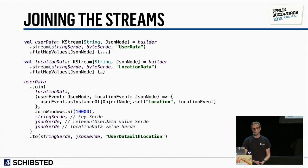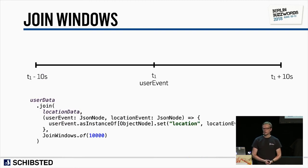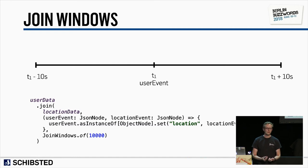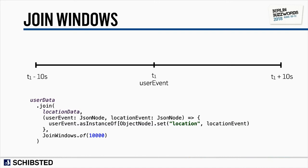About join windows: each Kafka entry has a key, a value, and a timestamp — and the join uses both the key and the timestamp. Keys remain unchanged throughout our processing, so the keys for both the relevant user data event and the corresponding location data event will be the same. For something to qualify for a join, the key must match and the events must be within a specific time window — the location event must arrive within 10 seconds, either before or after the user event.